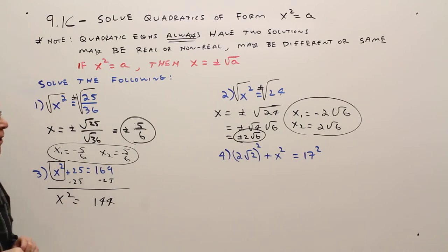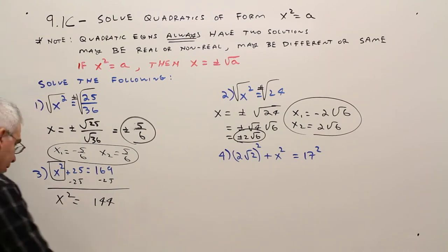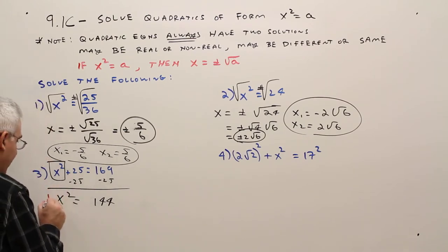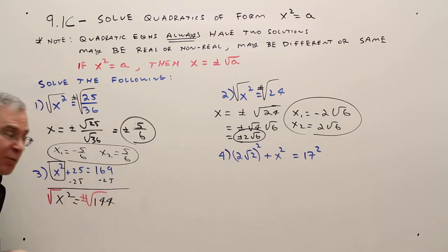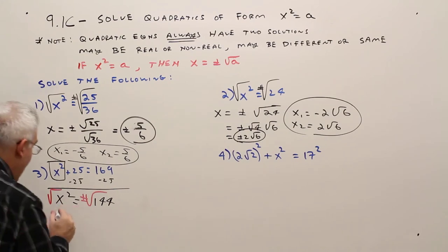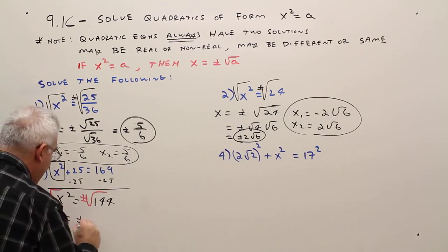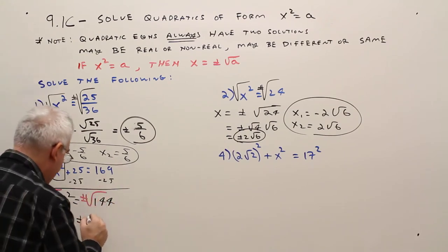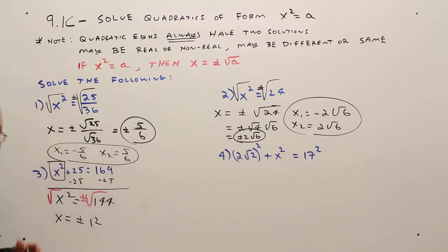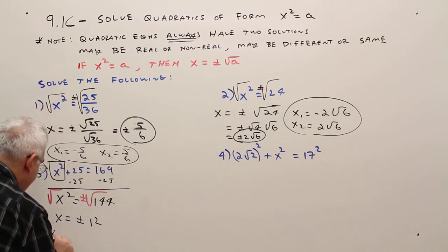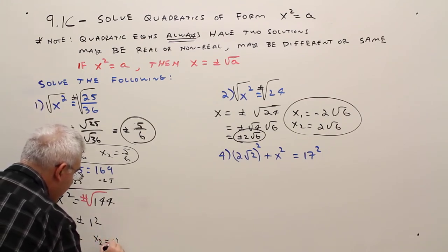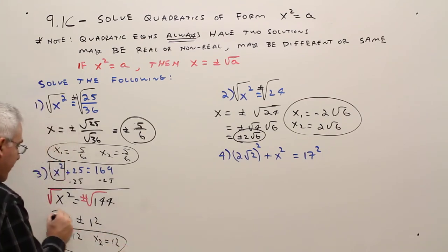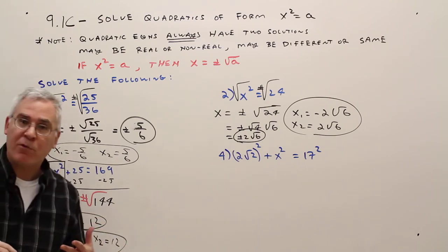Once I've got it in this form, then I can go ahead and take the square root of the left side and plus or minus the square root of the right side. So I will obtain X equals plus or minus 12. And then again, if you want, X sub 1 equals negative 12, X sub 2 equals positive 12, however you wish to represent your answer.